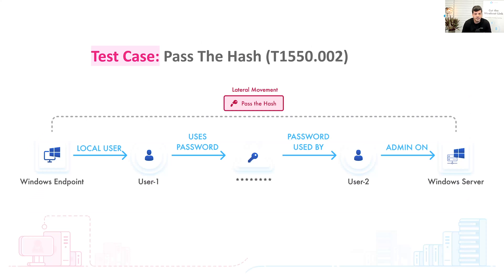Let's take a test case: the Pass-the-Hash scenario. Pass-the-Hash is a lateral movement and defense evasion technique that allows an adversary to move laterally between endpoints based on credentials that can be reused because those two users share the same credentials. It's very common between endpoints built from the same image where default built-in user passwords have not been changed after deployment — something still very common in organizations and very hard to track.